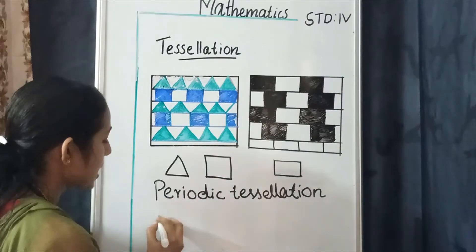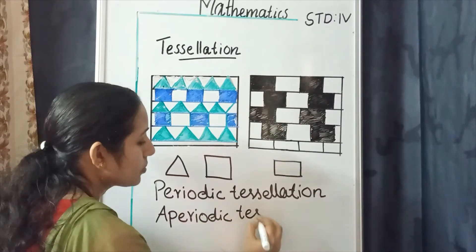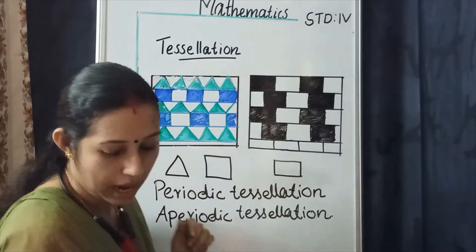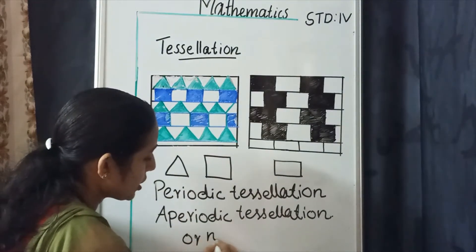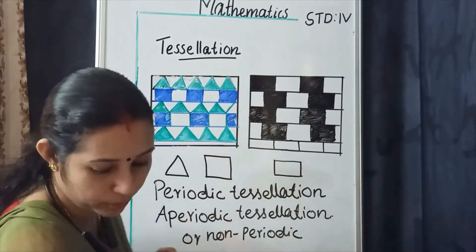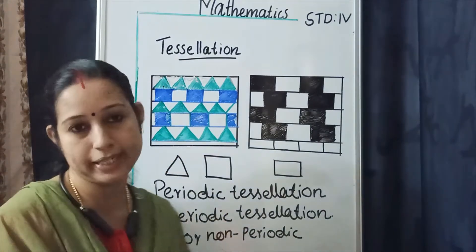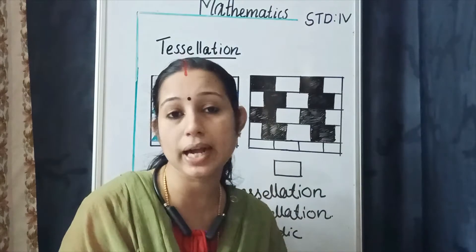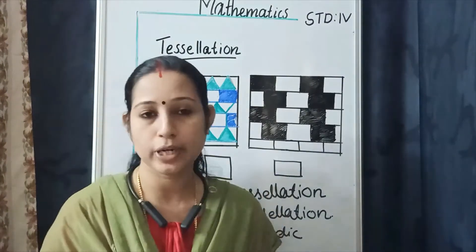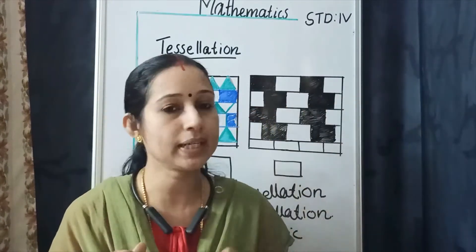Another type of tessellation is the aperiodic tessellation, also called a non-periodic tessellation. A non-periodic tessellation is a tessellation that does not have a repeating pattern. In contrast, when the same shape is repeating, that is called a periodic tessellation.